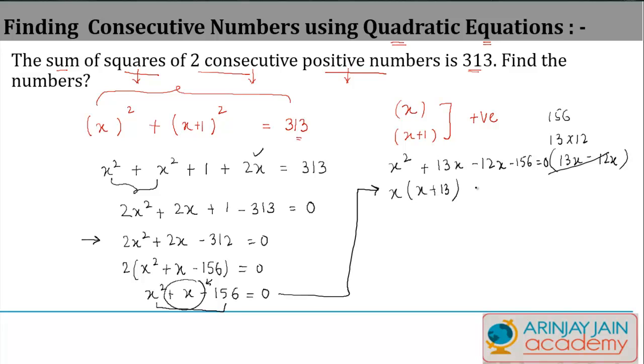I take -12 as common between these two and I get (x + 13) as well. Or if I rewrite this, I get (x - 12)(x + 13) = 0.